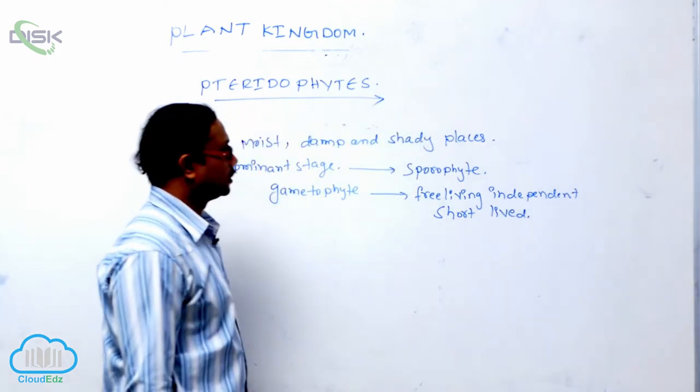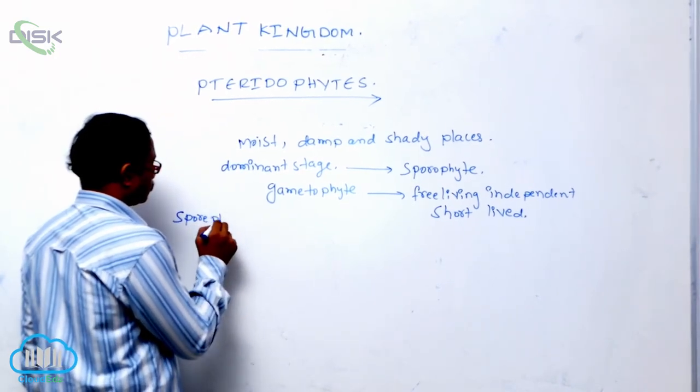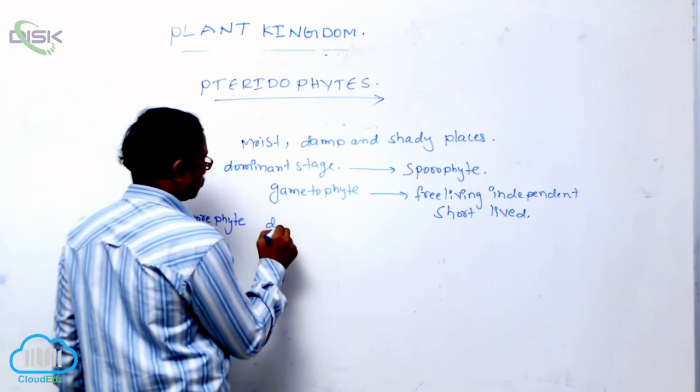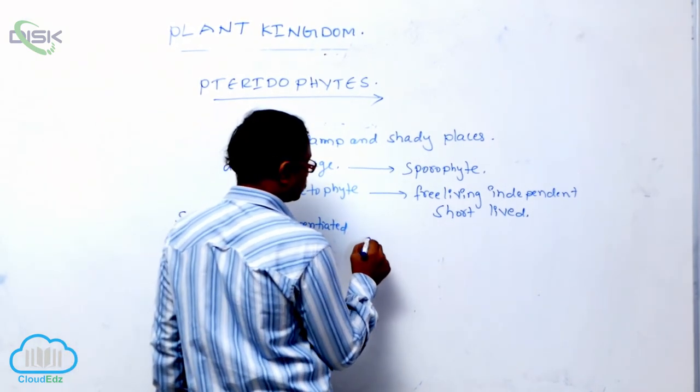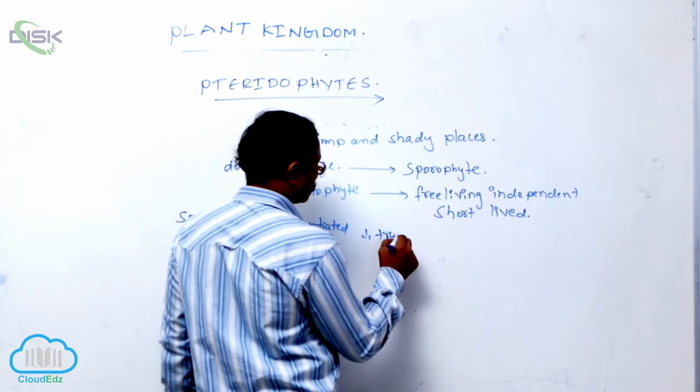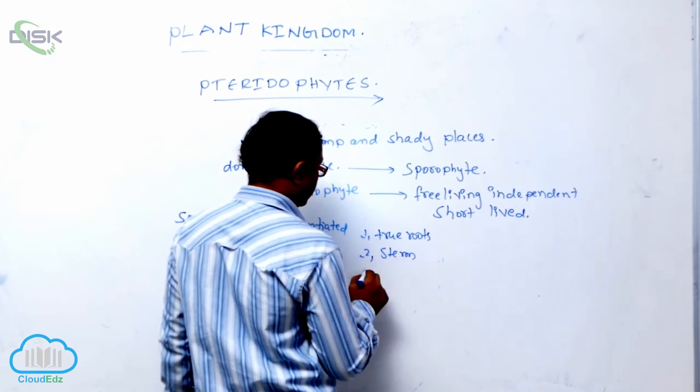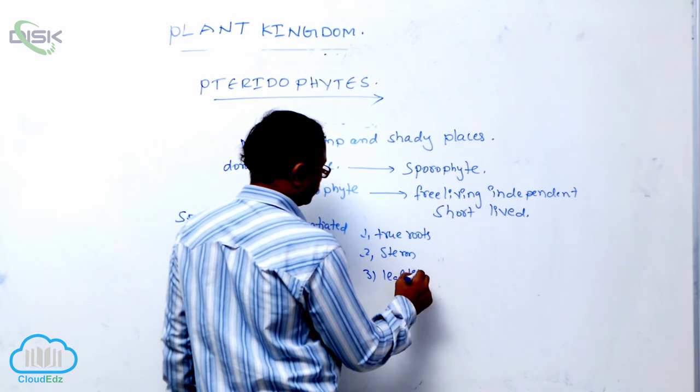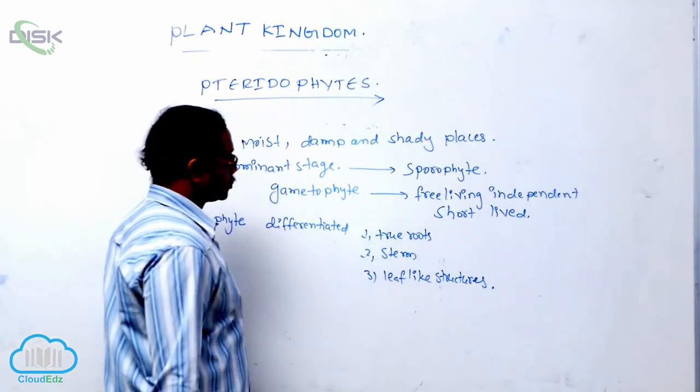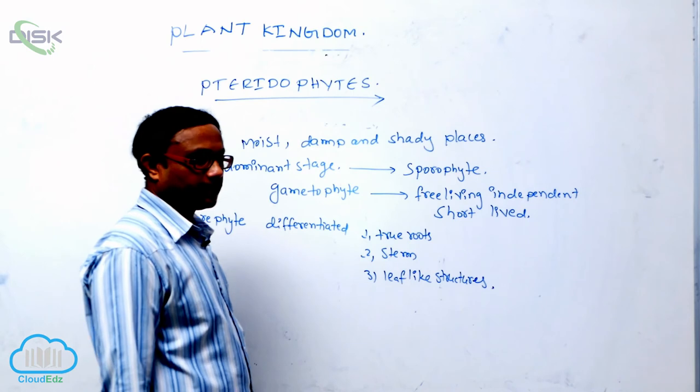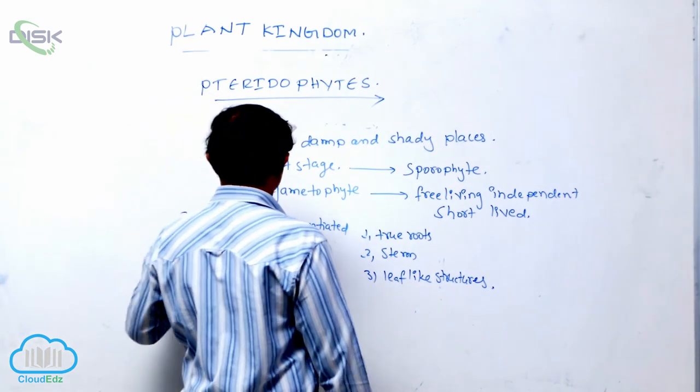The sporophyte is differentiated into true roots, stem, and leaf-like structures. Roots are responsible for absorbing water and minerals from the soil and providing fixation to the plant. In the stem anatomy...